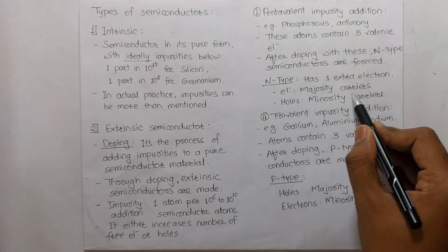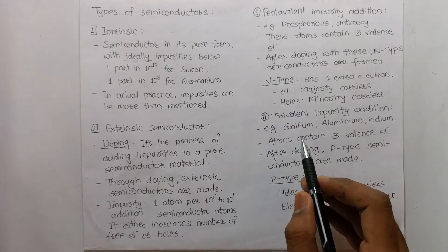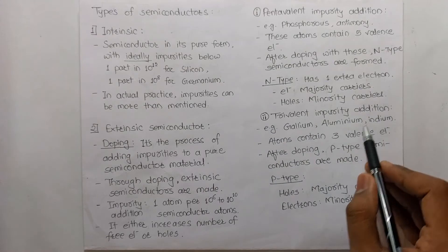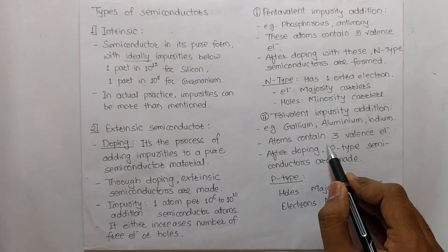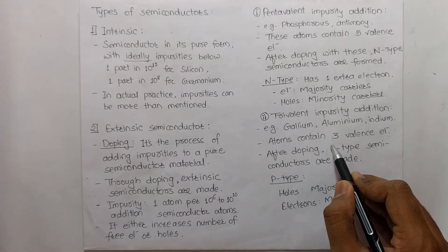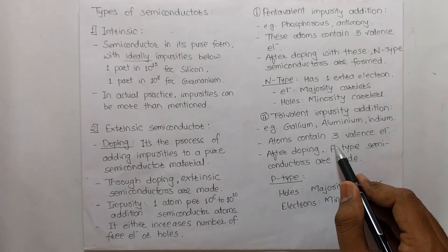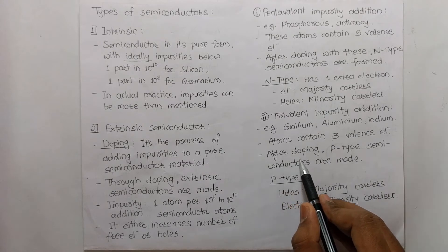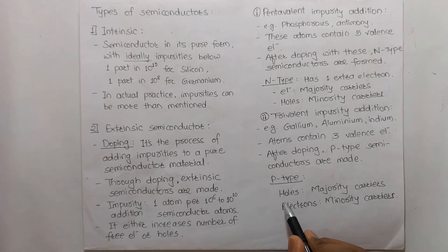In N-type semiconductors, electrons are the majority carriers and holes are the minority carriers. With trivalent impurity addition, only 3 valence electrons are supplied to the silicon or germanium atom — one less than needed for stability — leaving 1 hole, or the absence of 1 electron. After doping with trivalent impurities, P-type semiconductors are made, where holes are majority carriers and electrons are minority charge carriers.